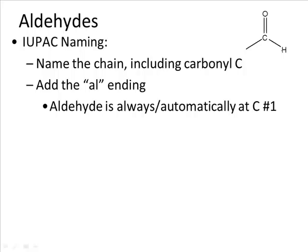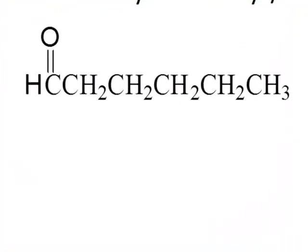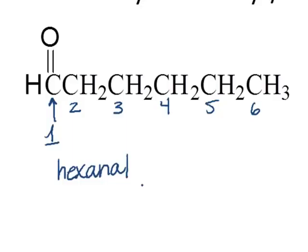That means two things: you don't have a choice of whether to number from the left or right side — you start at the carbonyl carbon — and you don't need to specify the location of the aldehyde. For example, numbering from the carbonyl carbon as carbon one, then two, three, four, five, six gives six carbons total, making the name hexanal. No numbering is needed to designate the carbonyl bond location since the AL ending tells us it's on carbon one.